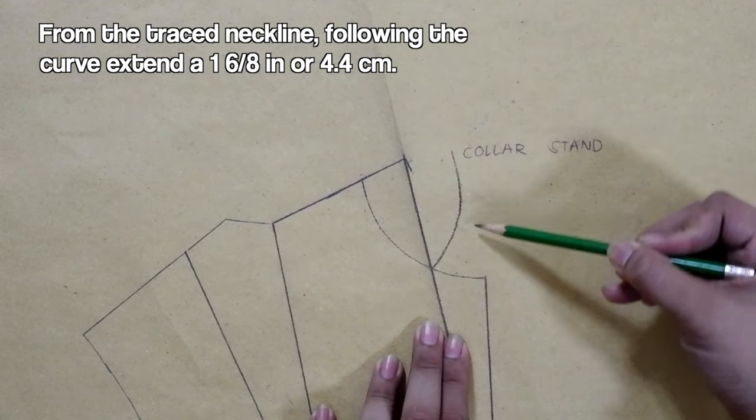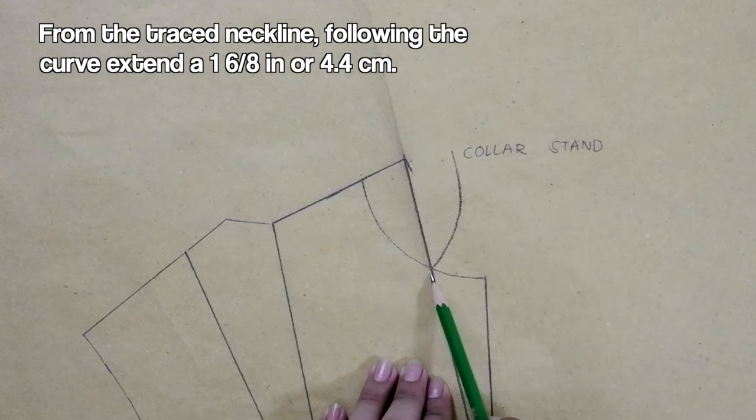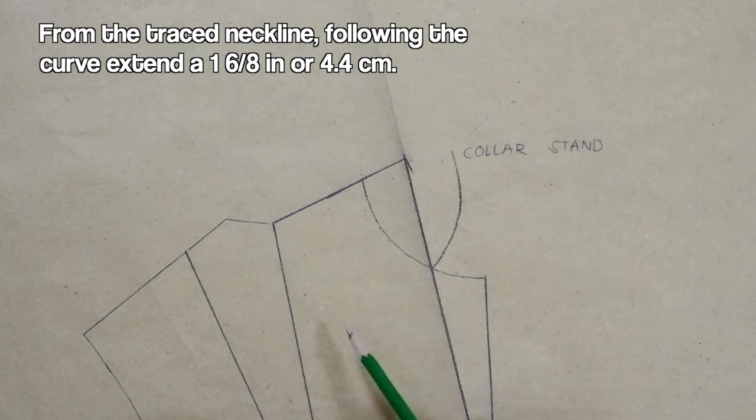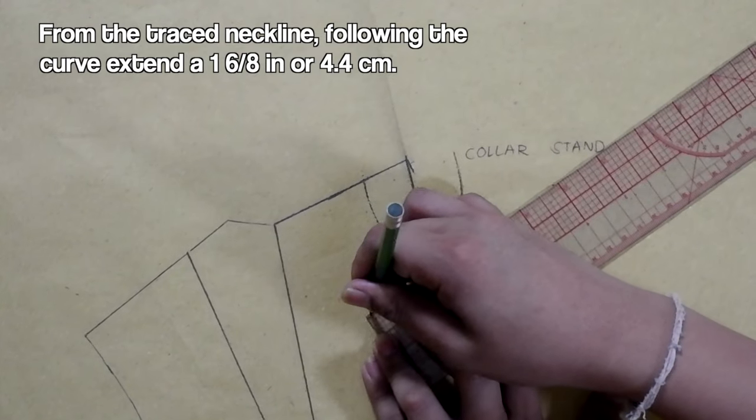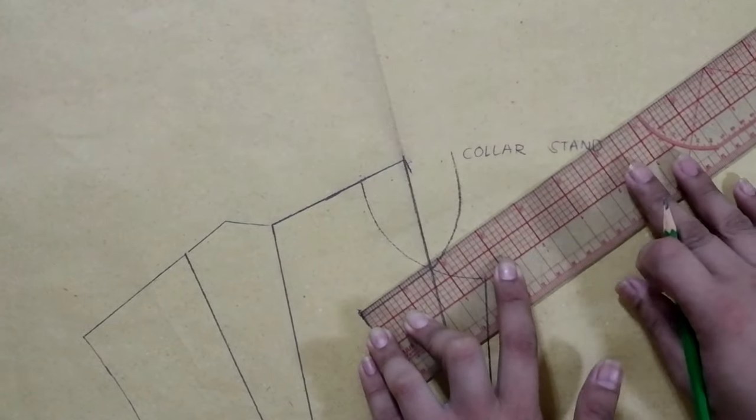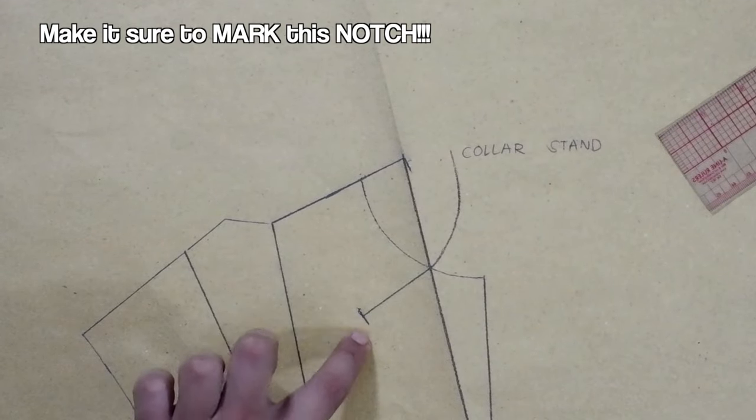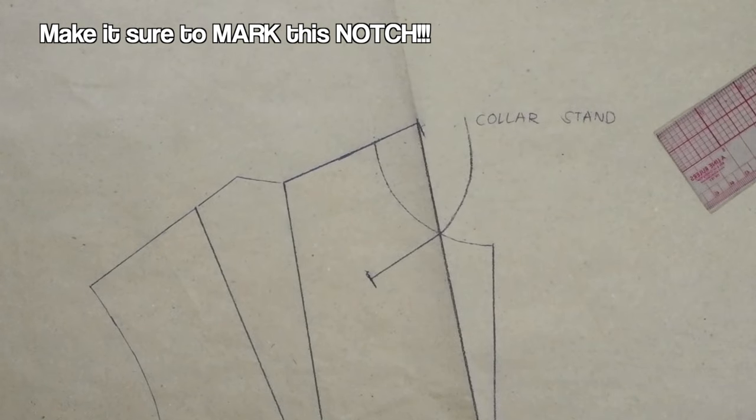From the traced front neckline, following the curve, extend 1 6/8 inches or 4.4 centimeters. Make sure to mark this notch.